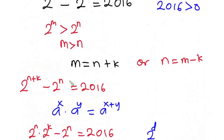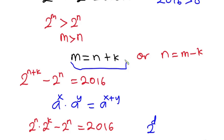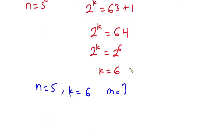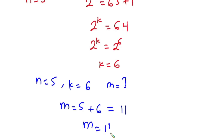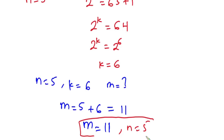We know that m equals n plus k. So m equals 5 plus 6, which equals 11. Therefore m equals 11. So now we know that m equals 11 and n equals 5. I hope you enjoyed watching this video. Please give it a thumbs up and don't forget to subscribe to this channel. Thanks a lot for watching — see you again in the next video.